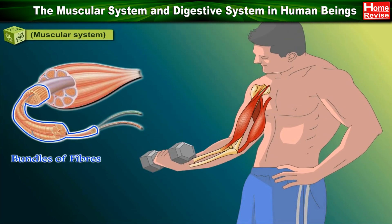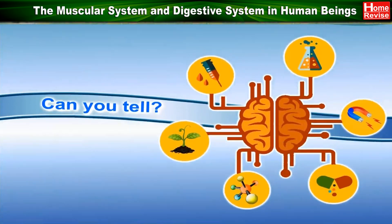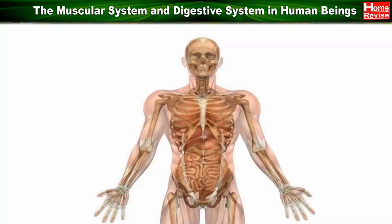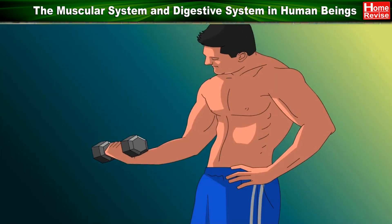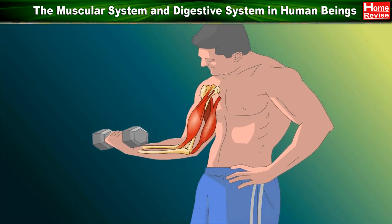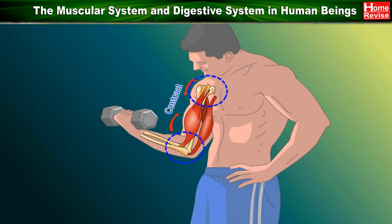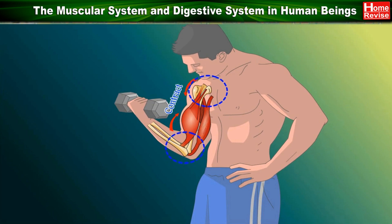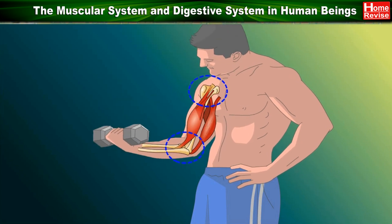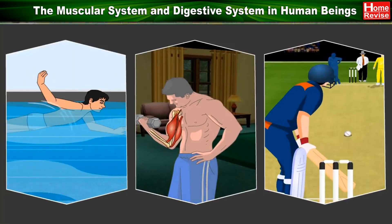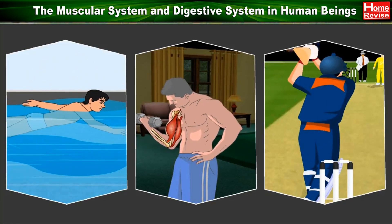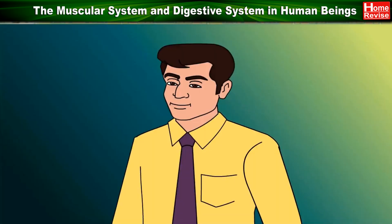Muscles are bundles of fibers that can contract and relax as required. Can you tell what is the mutual relationship between muscles and bones? Muscles are firmly attached to bones by means of tendons. When muscles contract, there is movement at the joint, and the bones move either nearer to or away from each other.